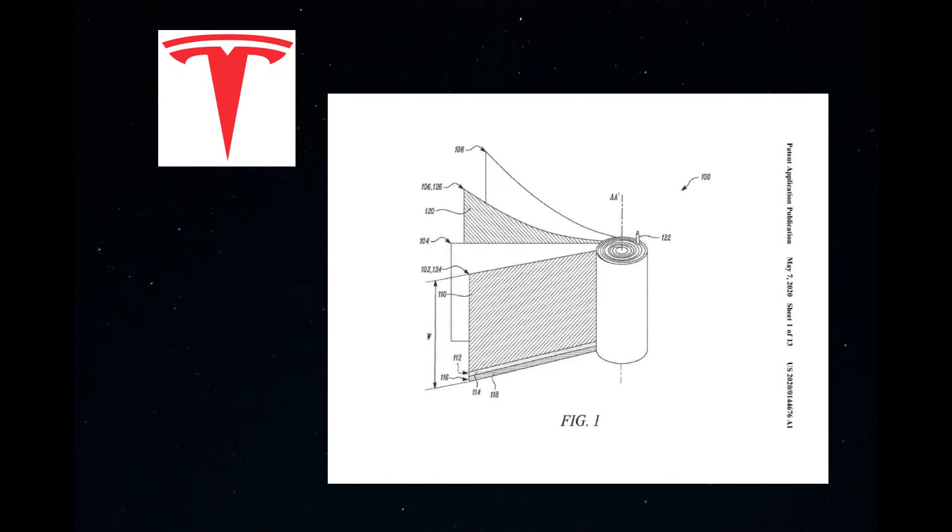Current cells use a jelly roll design in which the cathode and anode and separators are rolled together and have a cathode tap and an anode tap to connect the positive and negative terminals of the cell. The path of the current necessarily travels through these taps to connect to the outside of the battery cell.